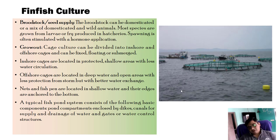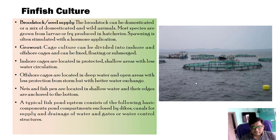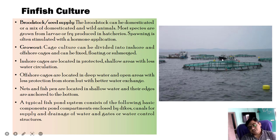Net and fish pens are located in shallow water and their edges are anchored to the bottom using bamboo poles. A typical fish pond system consists of compartments enclosed by dikes, canals for water supply and drainage, and gates or water control structures. Using this type of technology, fish are cultured in very large quantities.